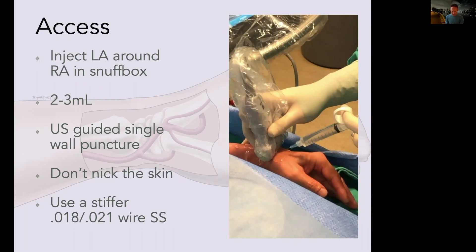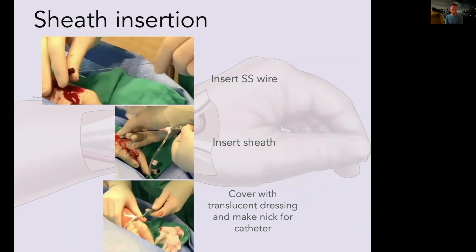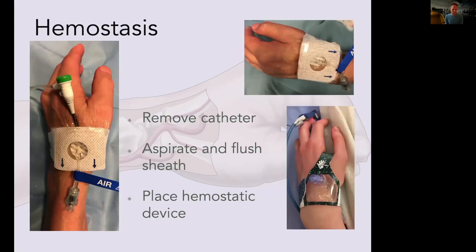Spring-coiled wires don't provide the same degree of support as a stainless steel wire. I use the Prelude Ideal — it has a really good transition. Terumo has the Slender. The key advantage of the Ideal is it's a flat braided sheath, making it much less prone to kinking — important in the snuff box due to the angles involved. Once you have access, insert your stainless steel wire, insert your sheath, cover it with a translucent dressing, make a nick, and then address hemostasis. I use the Stat Seal — a hemostatic disc made by Biolife in Sarasota, Florida — with a 10-minute hemostasis protocol.